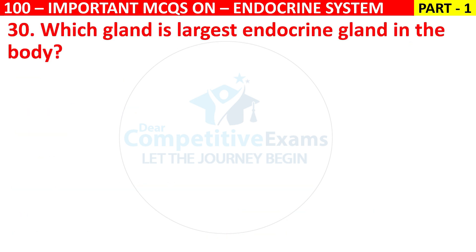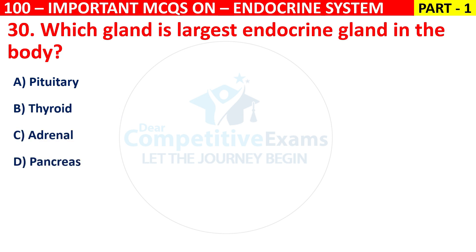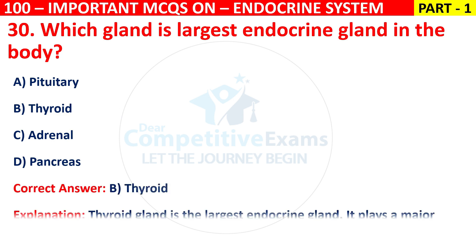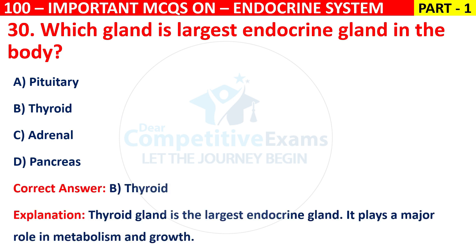Q30. Which gland is the largest endocrine gland in the body? Options are pituitary, thyroid, adrenal, or pancreas. The correct answer is B, that is thyroid gland. The thyroid gland is the largest endocrine gland. It plays a major role in metabolism and growth.